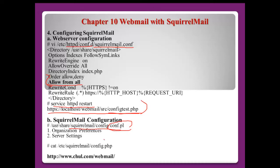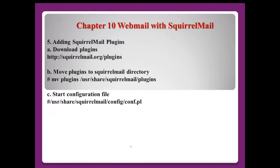For SquirrelMail configuration, go to the directory '/usr/share/squirrelmail/config' and run 'conf.pl'. There are around 9 or 10 menu items to configure — the two most important are organization preferences and server settings. Once complete, the configuration is saved in 'config.php'. You can then access SquirrelMail at 'chol.com/webmail'. SquirrelMail also supports many plugins — download them, move to the plugins directory, then run the configuration command to acknowledge them.